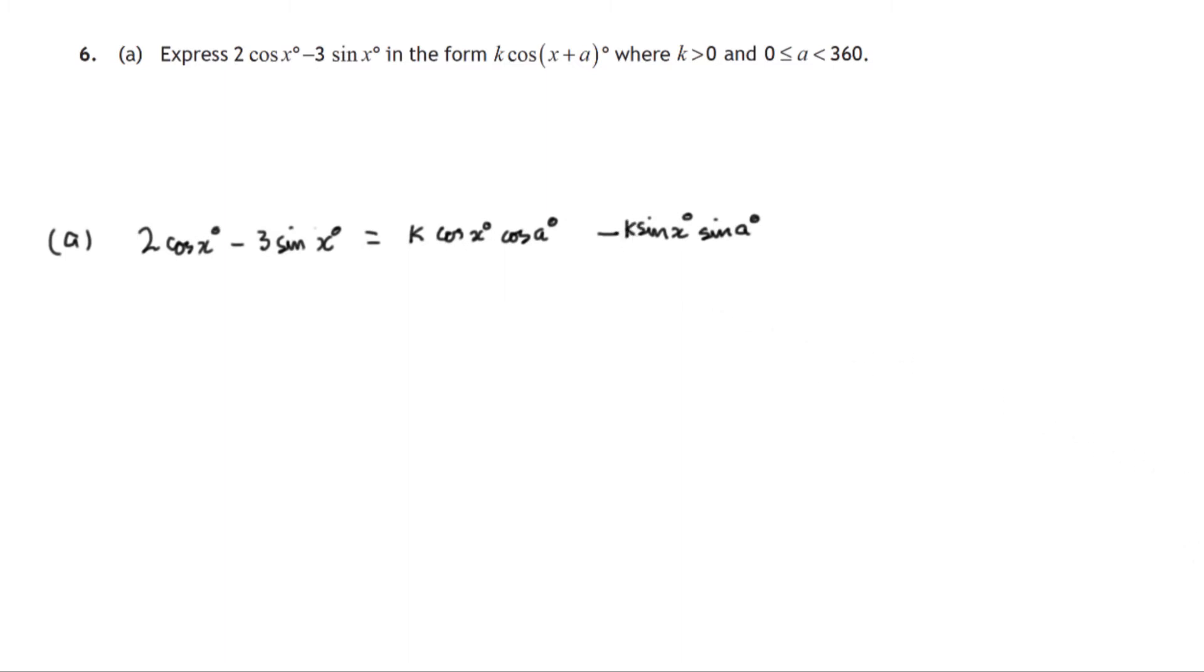And since these two sides of the equation have to be equal, let's look at what's multiplying cosine of x. We've got 2 times cos x. On the right hand side, what's multiplying cos x is k cos a. We could certainly say that these two coefficients must be equal. k cos a must be 2. Otherwise, these two expressions would not be the same.